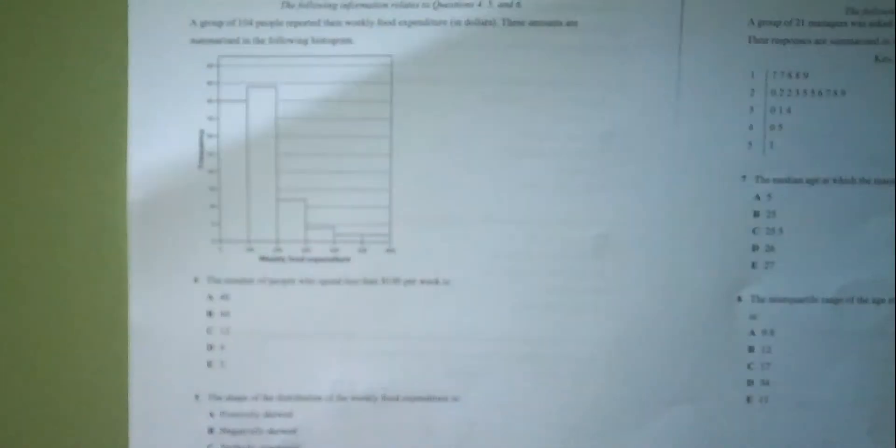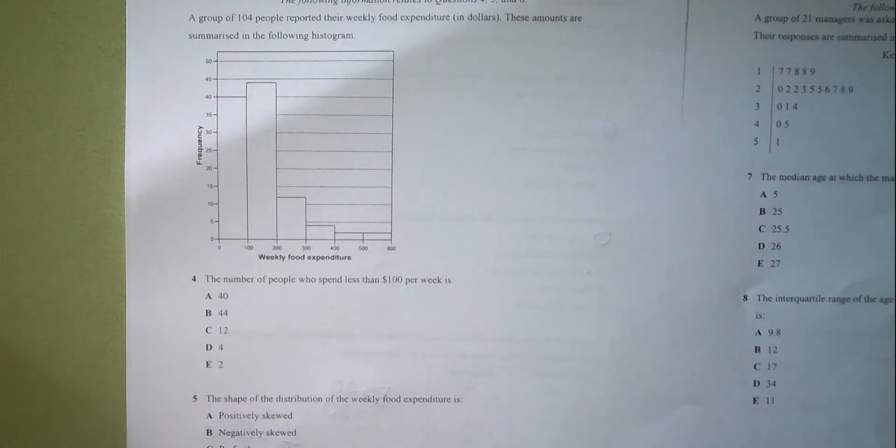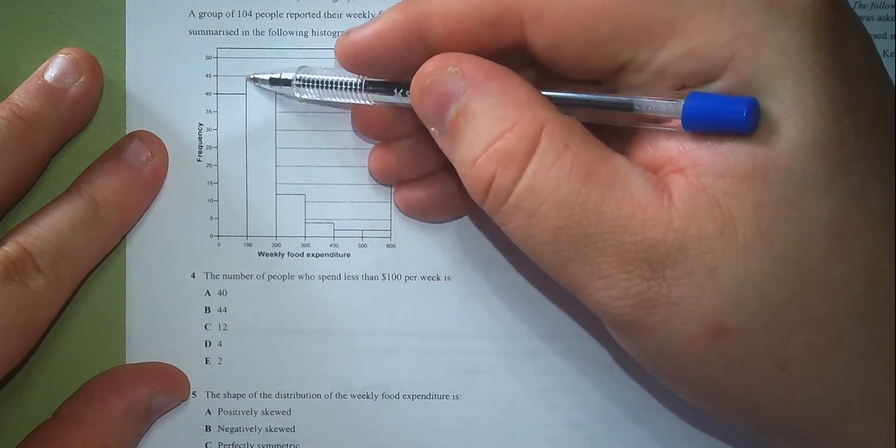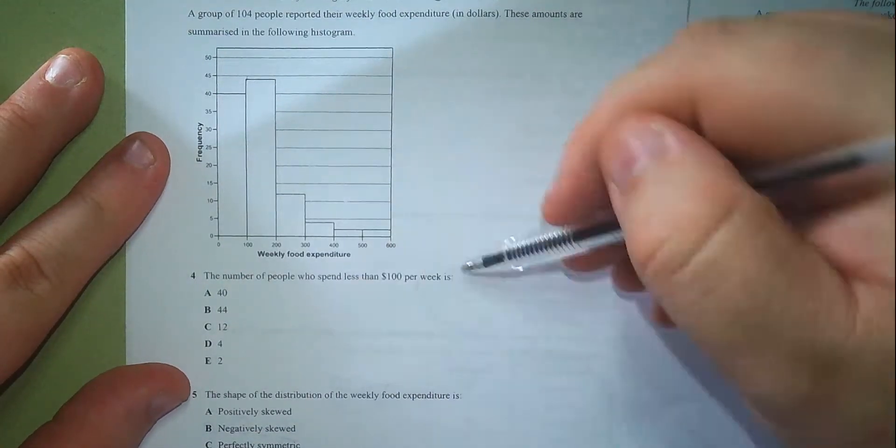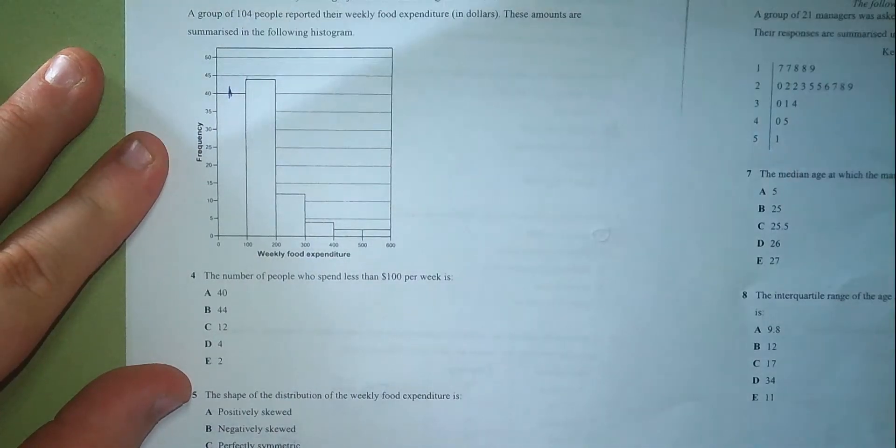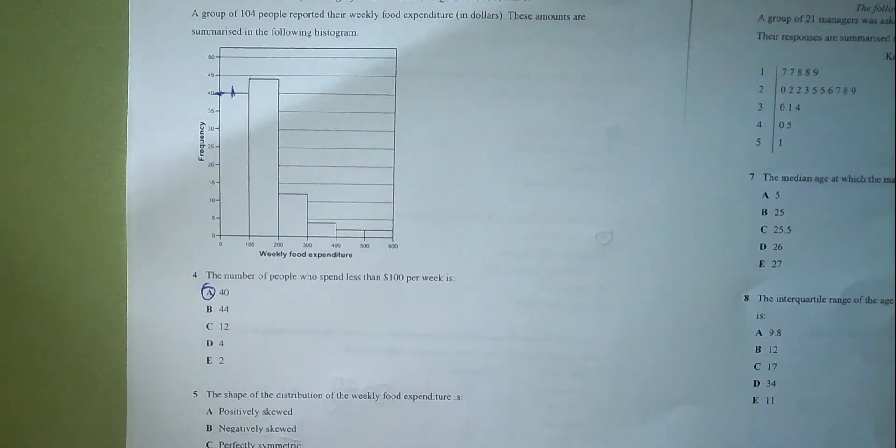We're looking at a histogram talking about number of students and their weekly food expenditure in dollars. The number of people who spent less than $100 per week is equal to what? The $100 per week line is this line here. So anybody who spent less than that is between 0 and 100, which is purely this column here, which you can see is equal to 40.